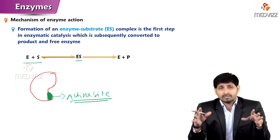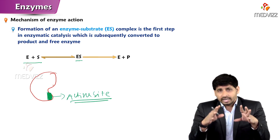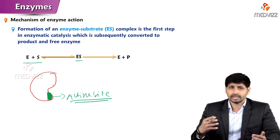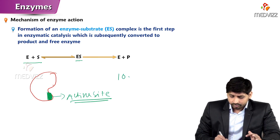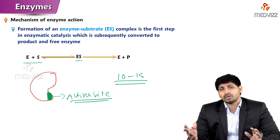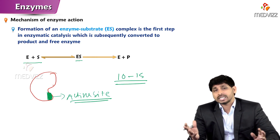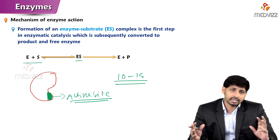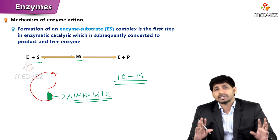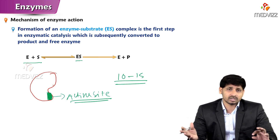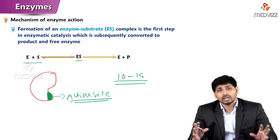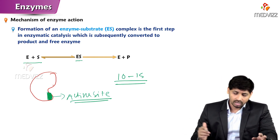The substrate will not go and bind to any other place of the enzyme — it will identify the place where it is suitable to bind. That place is the active site. Active sites are made up of a few amino acids, like 10 to 15 amino acids. The number and type of amino acids vary enzyme to enzyme. Some enzymes act in acidic environments, some in alkaline, so some active sites are rich in acidic amino acids, some in basic, hydroxyl-containing, or sulfur-containing amino acids.